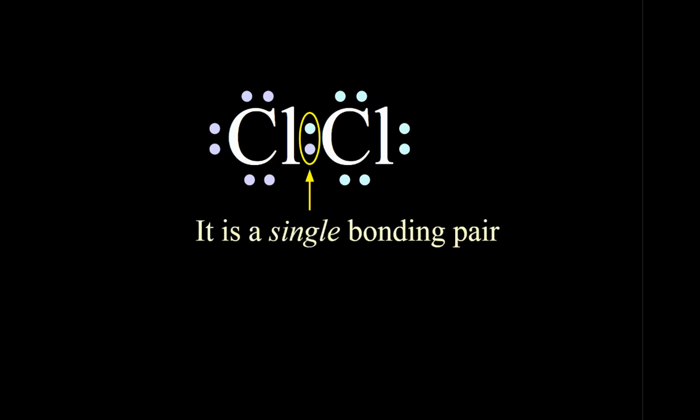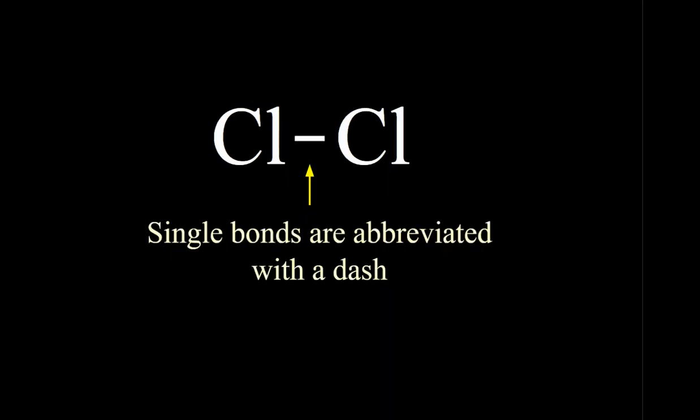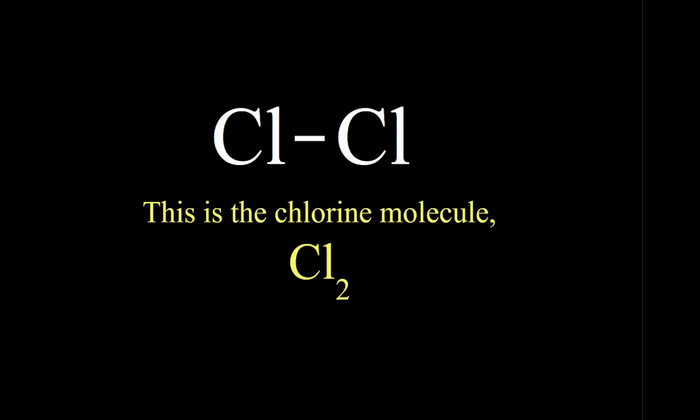So each chlorine has one bonding pair and three lone pairs. Three lone pairs are on the outside there. Lone pairs are pairs of electrons that are not shared. This is called a single bond. One bond consists of a pair of electrons. So one bond consists of two electrons. This is called a single bond. We abbreviate single bonds with a dash. So this is the chlorine molecule.